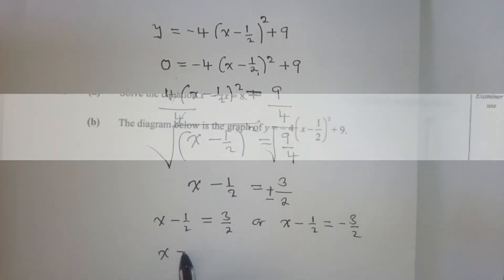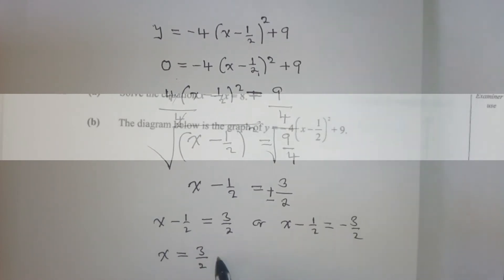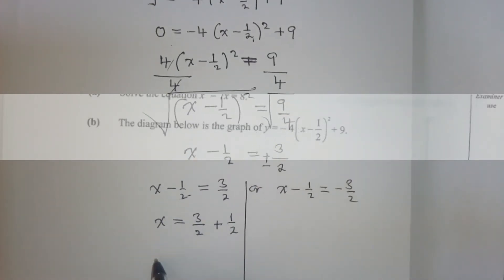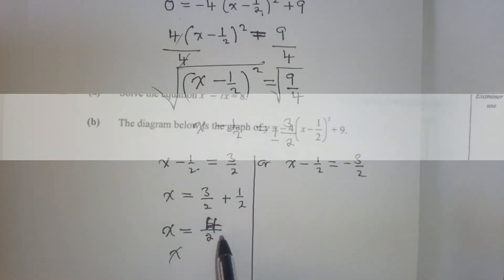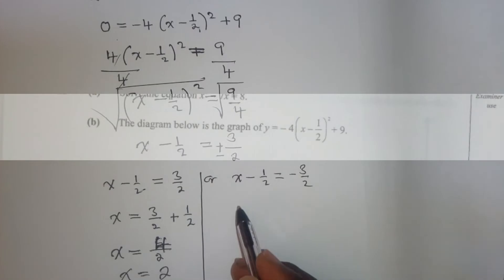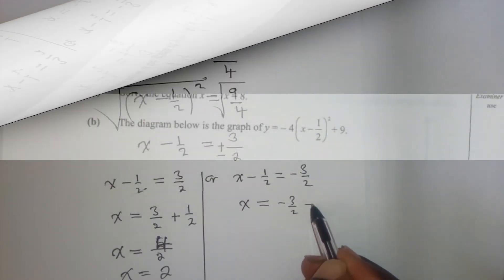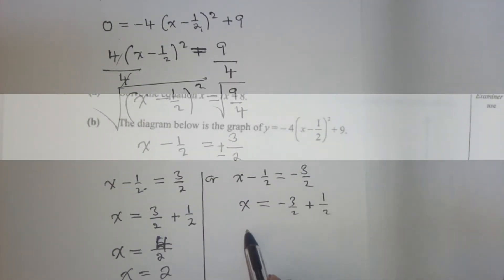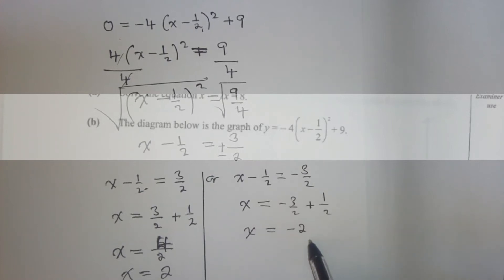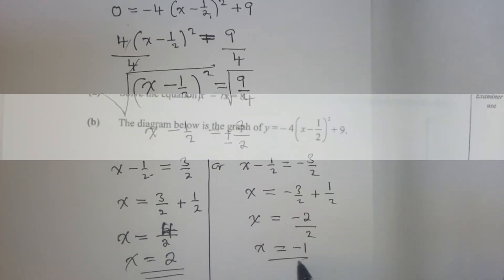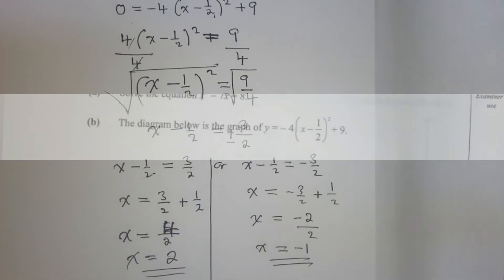We group like terms for each equation. For the first: x equals three over two plus one over two, so x equals two. For the second: x equals negative three over two plus one over two, so x equals negative one. These are the two values of x.